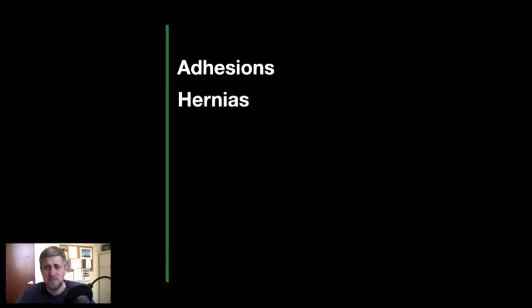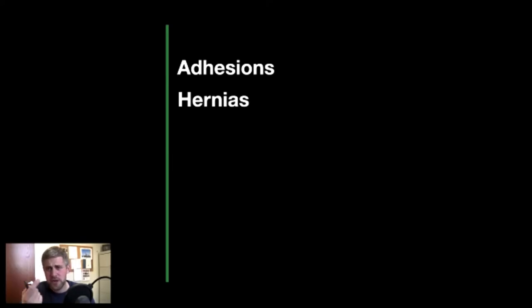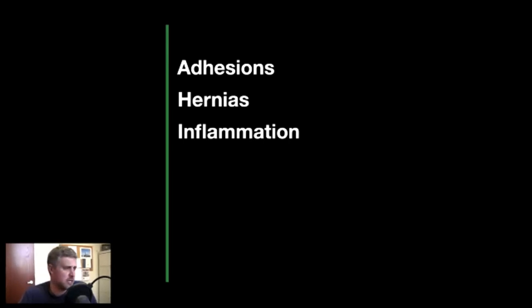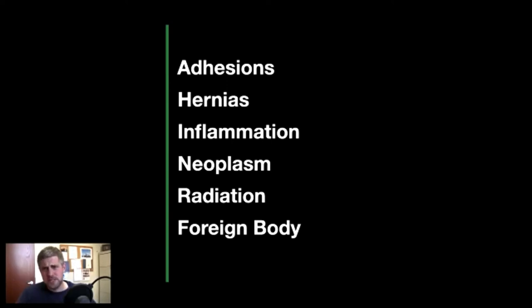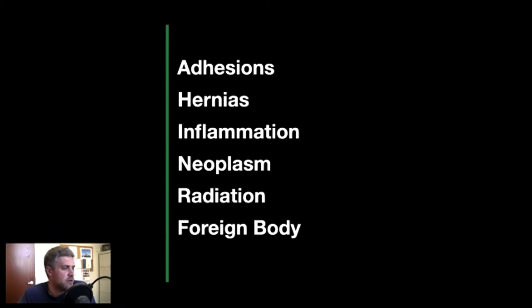If we think about those broad categories, we can start making a differential of more specific things. Adhesions are probably one of the more common causes of bowel obstruction, or hernias — if you have an abdominal wall hernia, umbilical hernia, or inguinal hernia with a loop of bowel in there and you can't get flow through, it's going to cause obstruction. Inflammation — think about your chronic inflammatory patients, your Crohn's, your ulcerative colitis. Cancer can certainly do it. Radiation used to treat cancer can cause stricturing in the bowel. And if you swallow a foreign body, that can cause an obstruction — even magnets that adhere to one another inside the bowel can create a closed-loop obstruction with pressure necrosis.